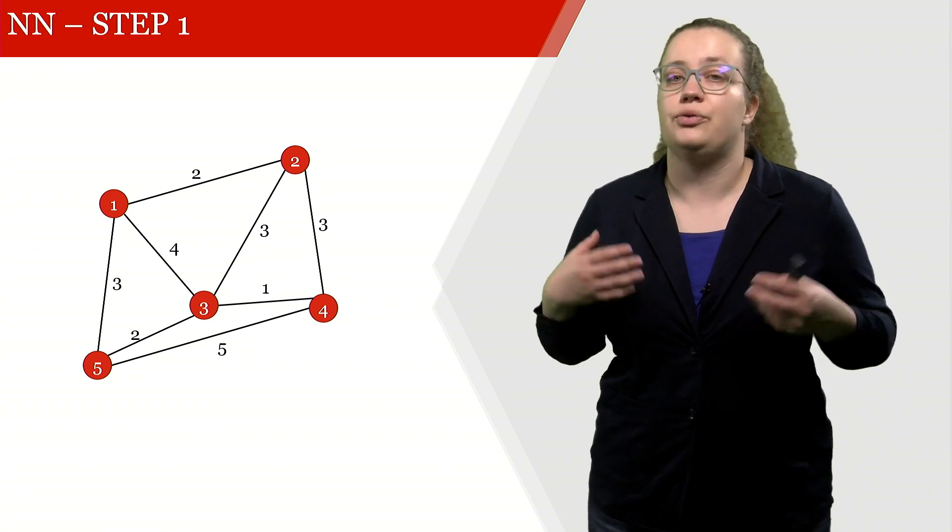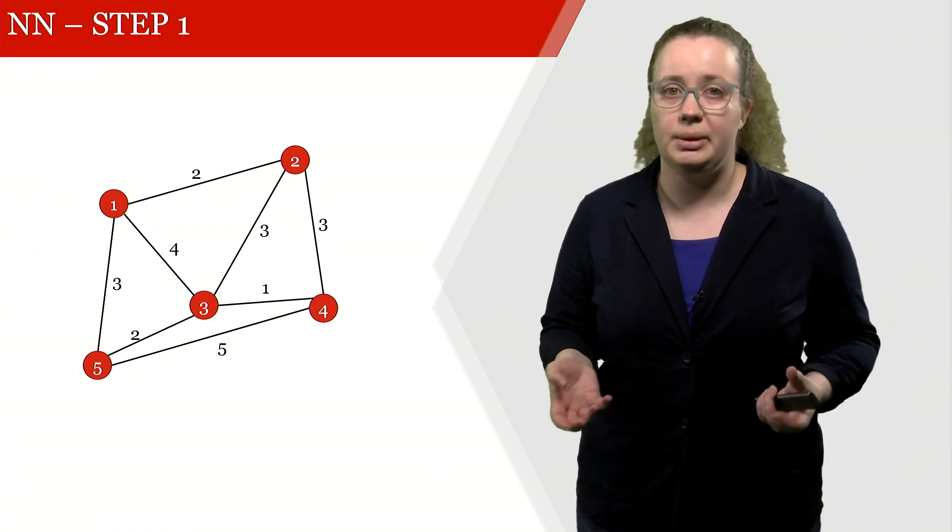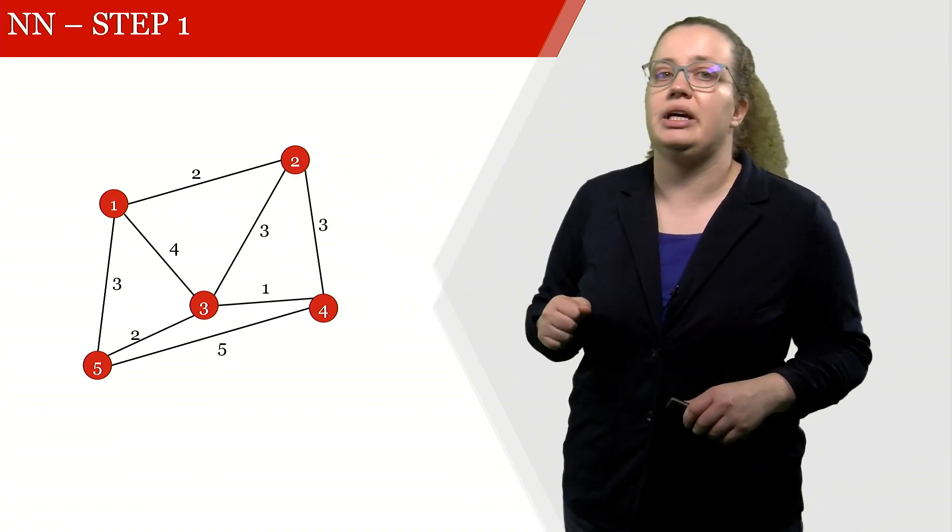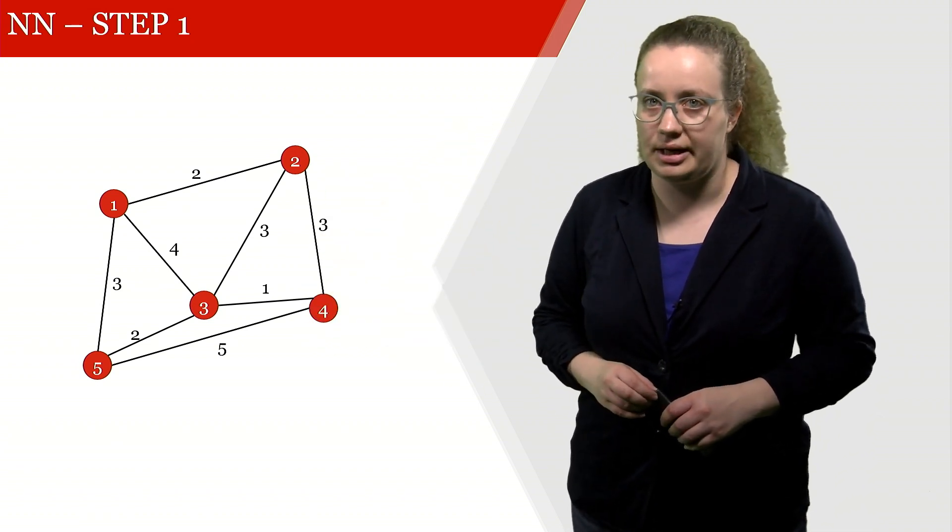Let's look at this from a very simple example. This example is even smaller than the Miller family example. Starting from, for example, node 1, we would like to find a route that visits all of these nodes exactly once.